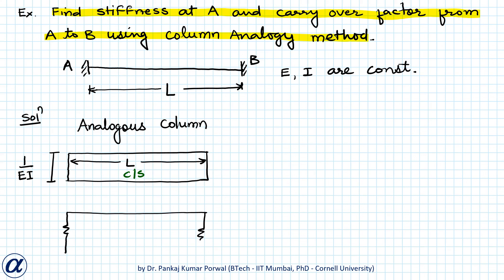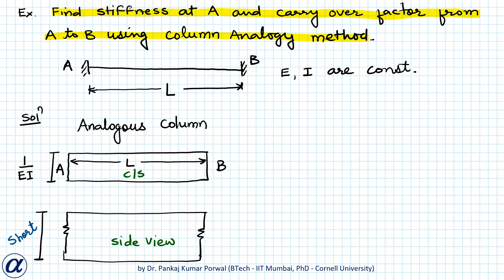The side view shows the height which is short. This is edge A, this is edge B, this is point A, and this is point B. On this analogous column, I apply a unit load at A corresponding to unit rotation at end A of our beam. Because of this unit load, the pressure at the base of the column can be written as F/A ± M'/I' · X.